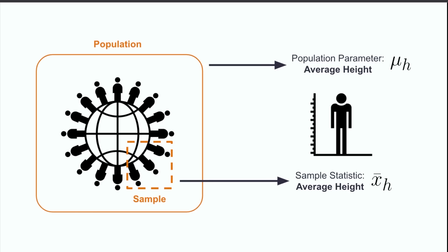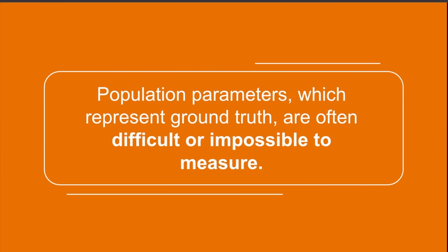If done properly, this sample statistic will offer a reasonable approximation of the true population parameter mu, without having all the effort of hopelessly trying to perfectly capture the truth for every single person in a population. In general, population parameters, which represent ground truth, are often difficult or impossible to measure.